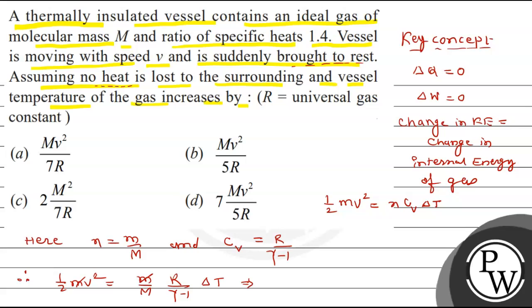Finally, we need an expression for del T, because we have to find out the temperature increase of the gas. So del T equals M V square gamma minus 1 divided by 2R, where M is mass, V is velocity or speed, gamma is the ratio of specific heats, and R is the universal gas constant.